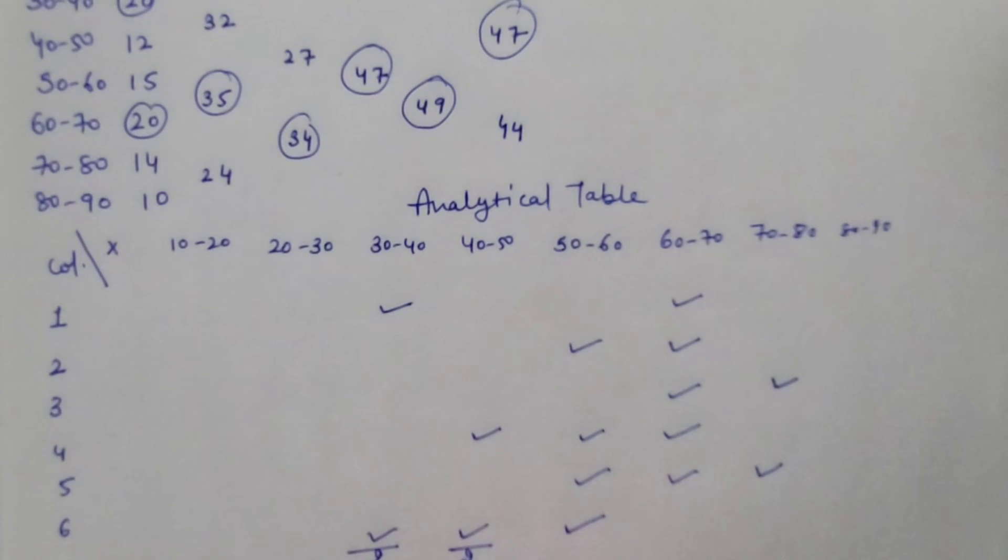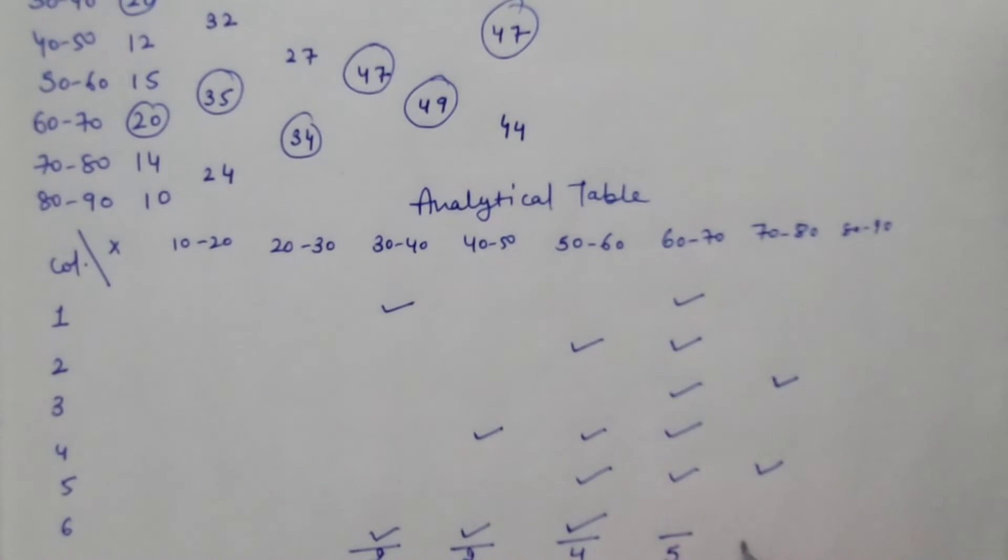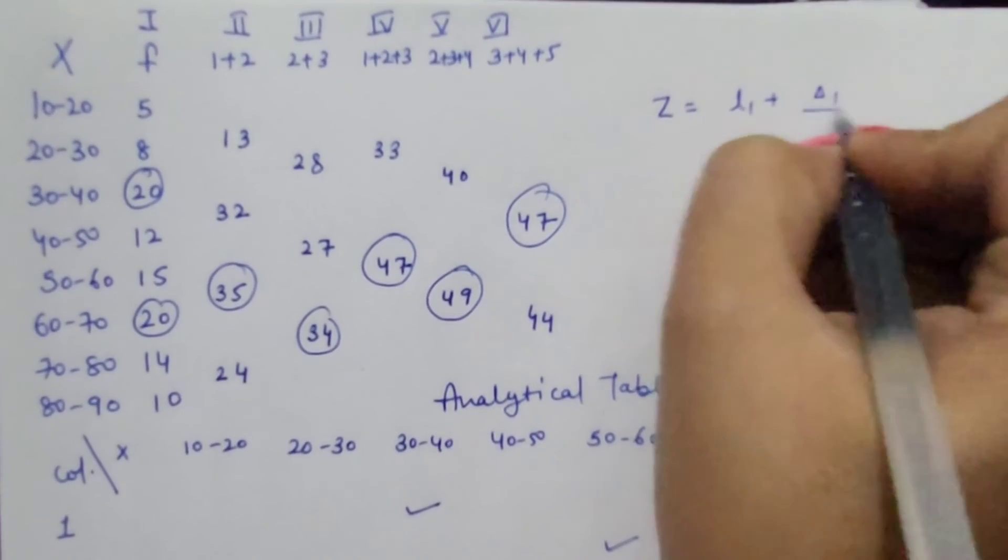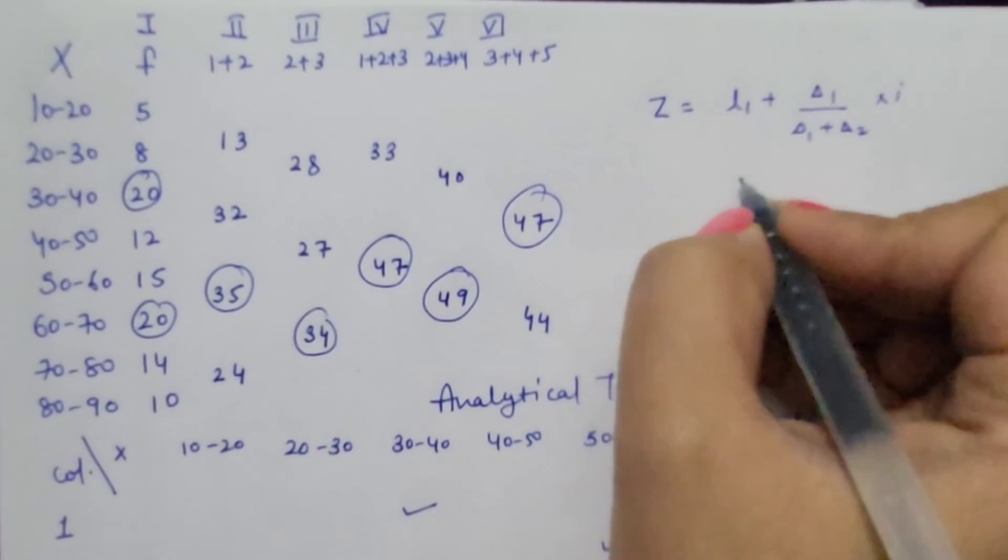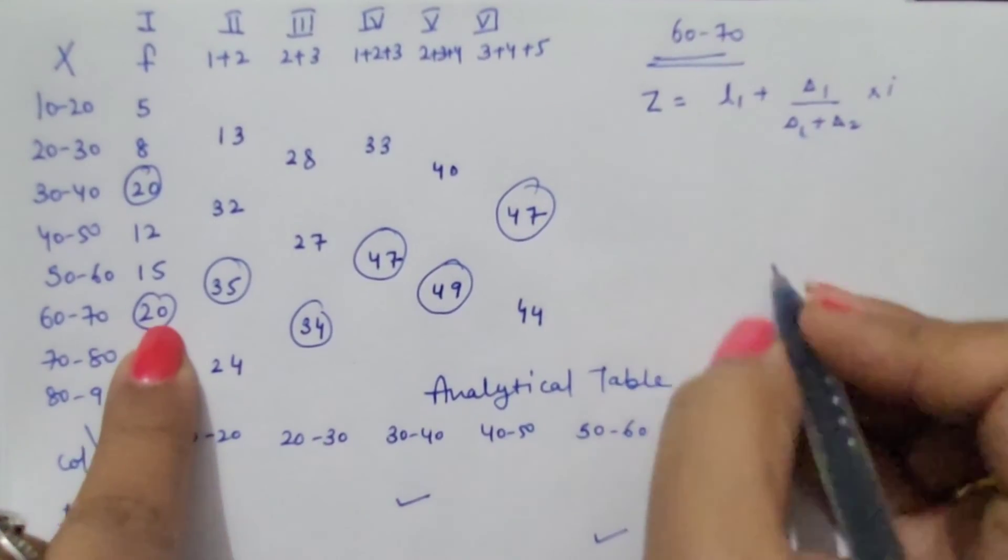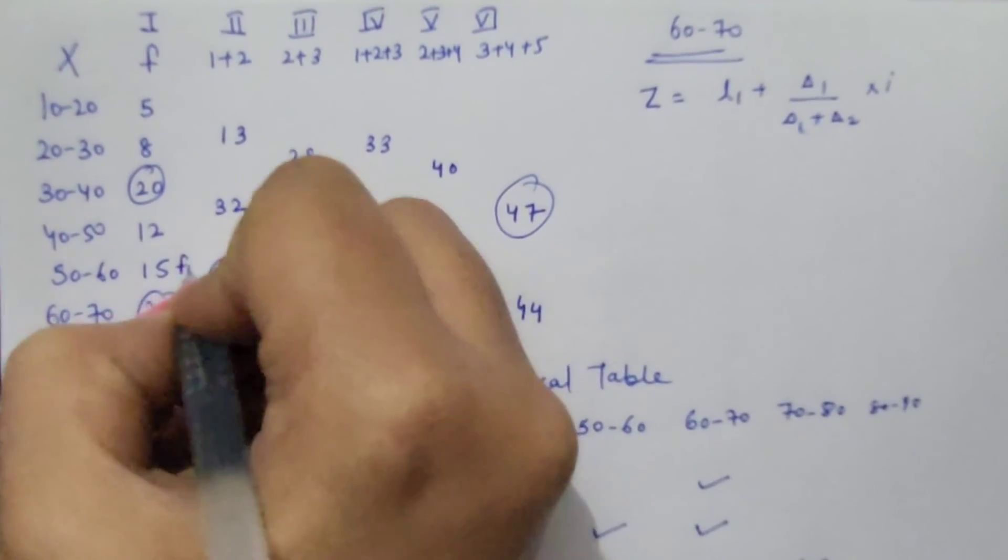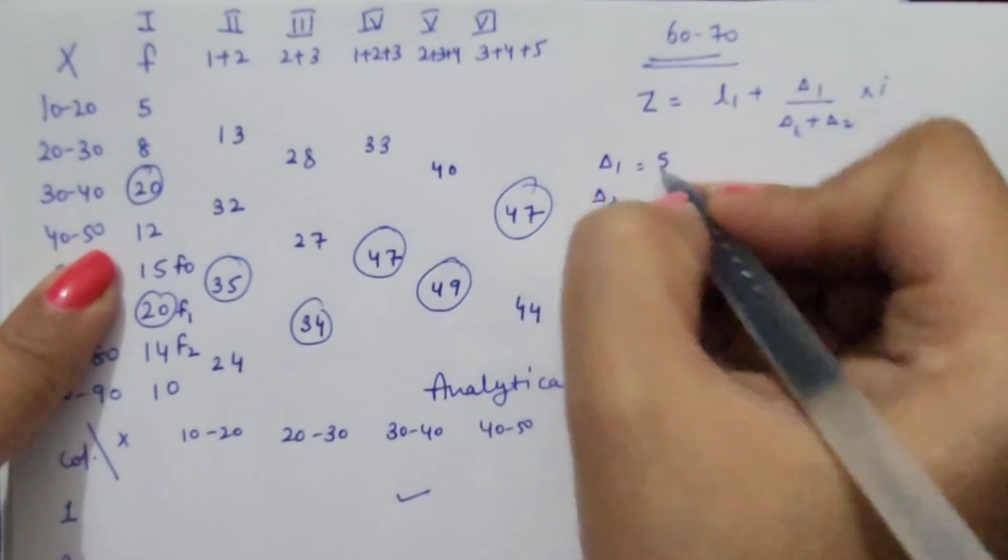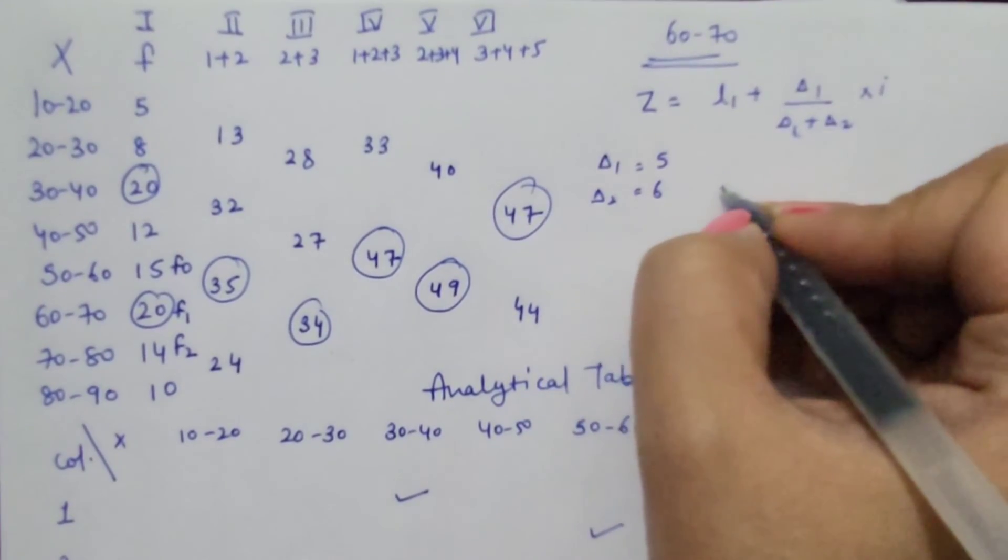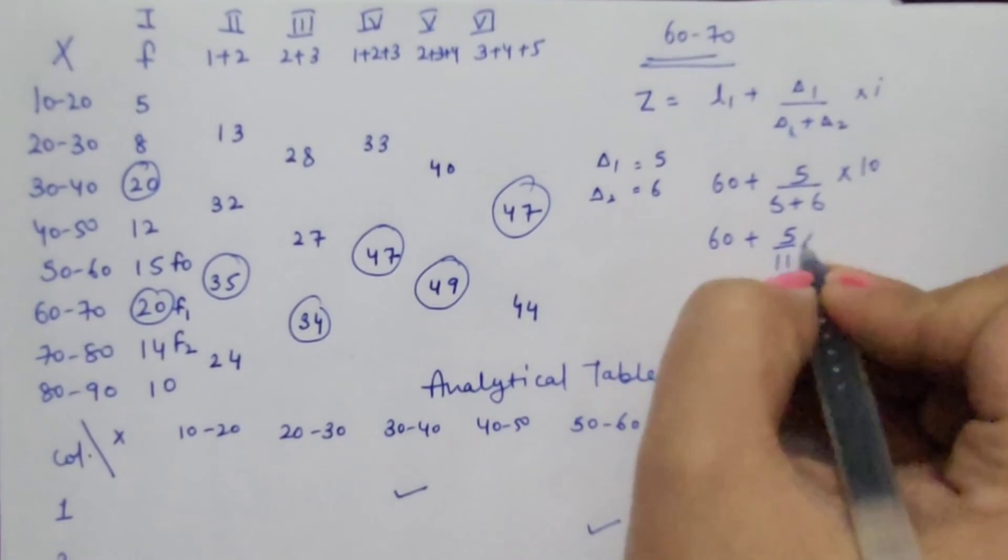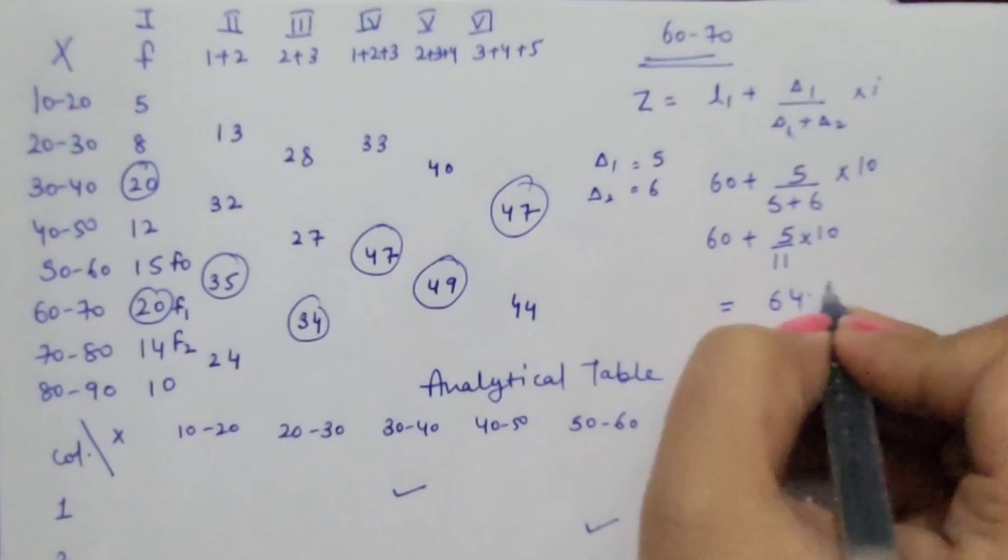2, 2, 4, 5 and 2. Highest frequency 5, mode lies in 60 to 70 class. To calculate mode, formula is L1 plus delta 1 divided by delta 1 plus delta 2 multiplied by I. Model class is 60 to 70. F1 is 20, F0 is 15, F2 is 14. Delta 1 is 20-15 that is 5, delta 2 is 20-14 that is 6. So 60 plus 5 upon 5 plus 6 multiplied by 10: 60 plus 5 upon 11 into 10. Answer would be 64.54.